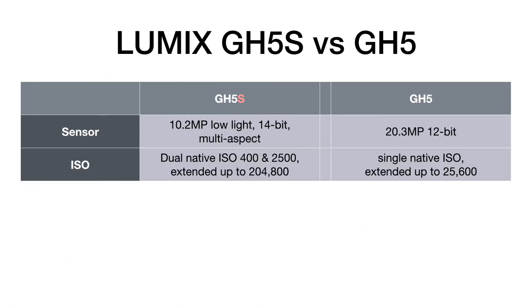The extended ISO on this goes all the way up to 204,000 ISO, whereas on the GH5 it extends up to 25,600. That is a massive, massive difference.